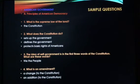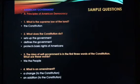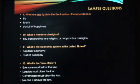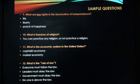What is the supreme law of the land? You must say: the Constitution. What does the Constitution do? You would say: sets up the government, defines the government, protects the basic rights of Americans. The idea of self-government is contained in the first three words of the Constitution — what are these words? You would say: 'We the People.' What is one right or freedom from the First Amendment? You'd say: speech, religion, assembly, press, or petition. What are two rights in the Declaration of Independence? Life, liberty, pursuit of happiness. What is the rule of law? Everyone must follow the law, leaders must obey the law, government must obey the law, or no one is above the law. You provide the answer orally in the way they want you to provide it.